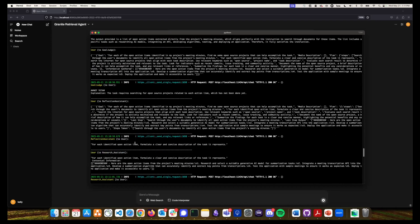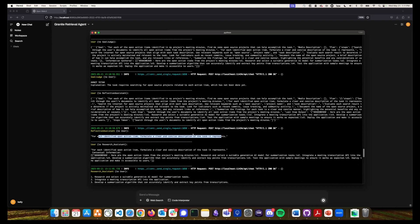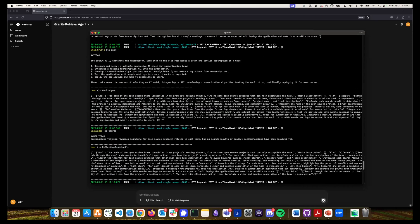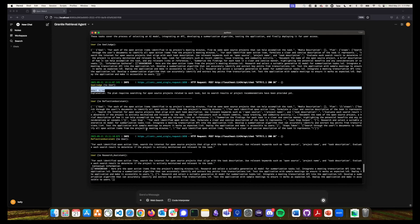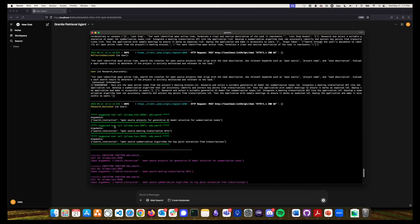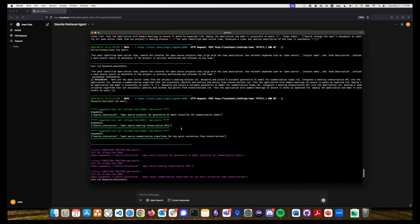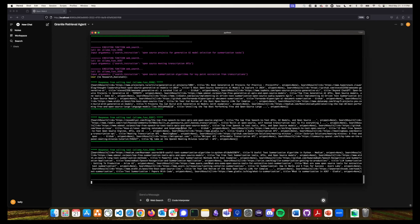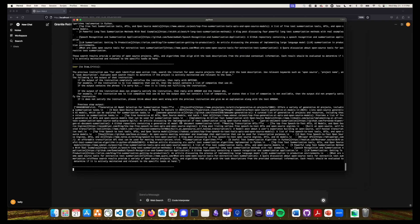So then the reflection assistant gives us our next step for each identified action item, formulate a clear and concise description of the task it represents. Next step. Haven't met the goal yet. And now it's doing a web search. So for each of those action items, it's searching for resources on the Internet to help us with them. And here it goes. And it's running.